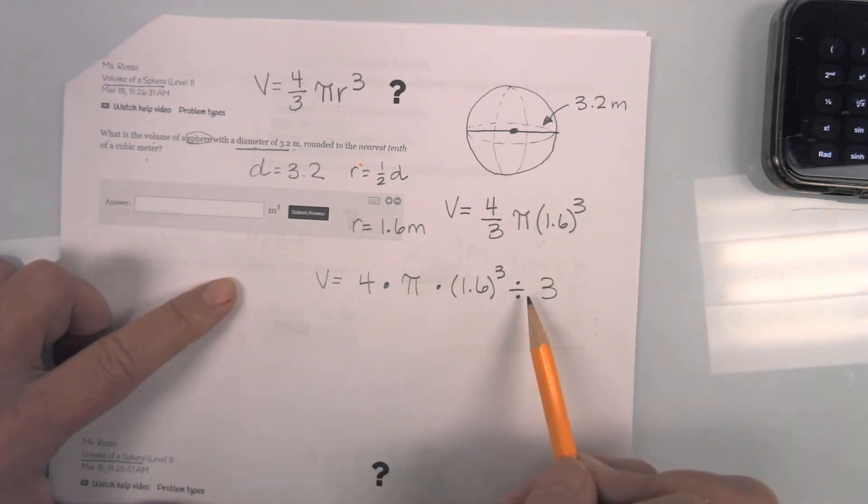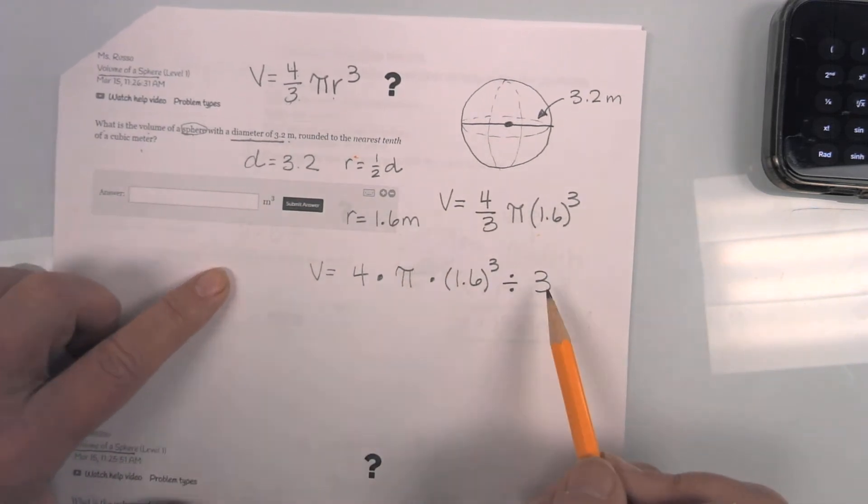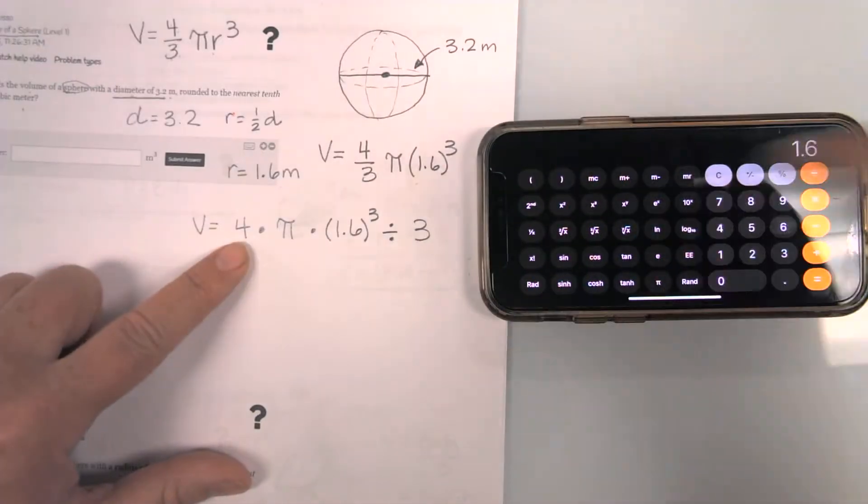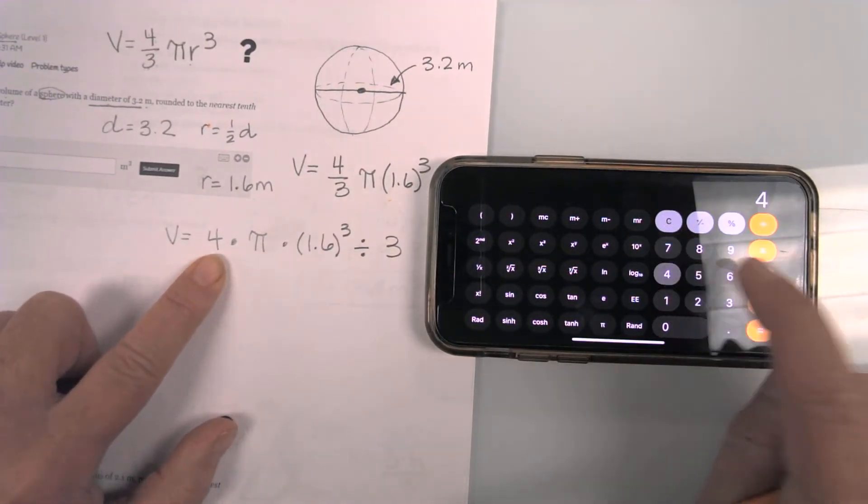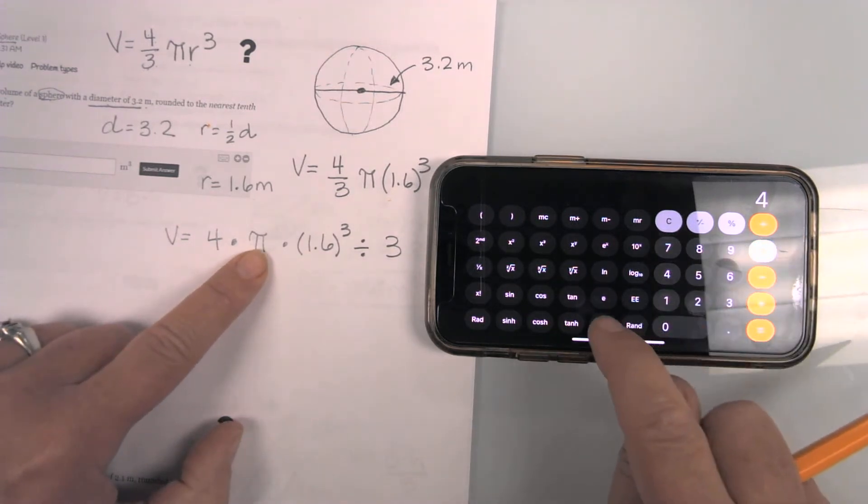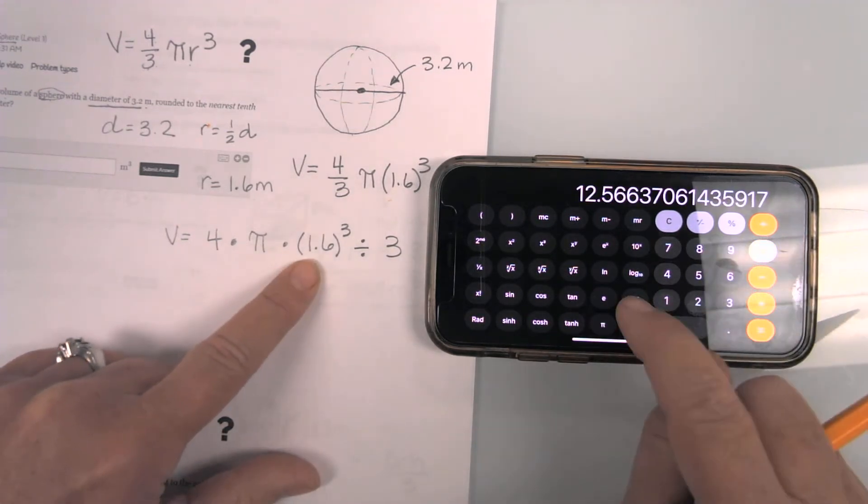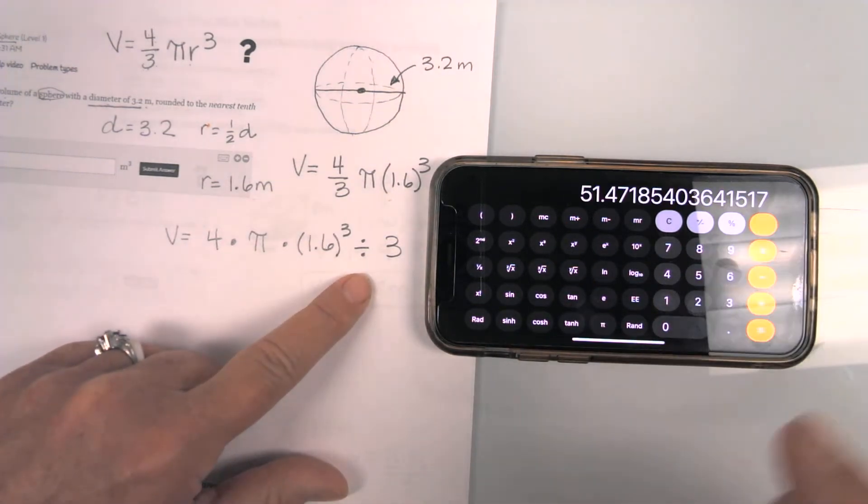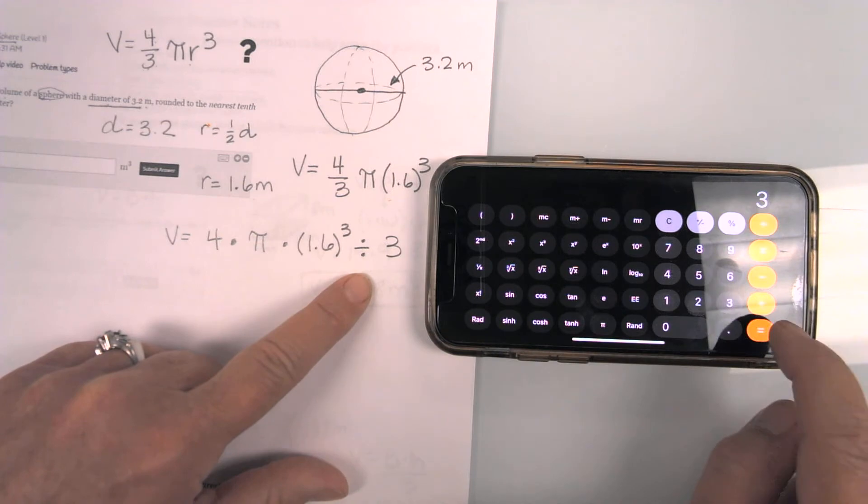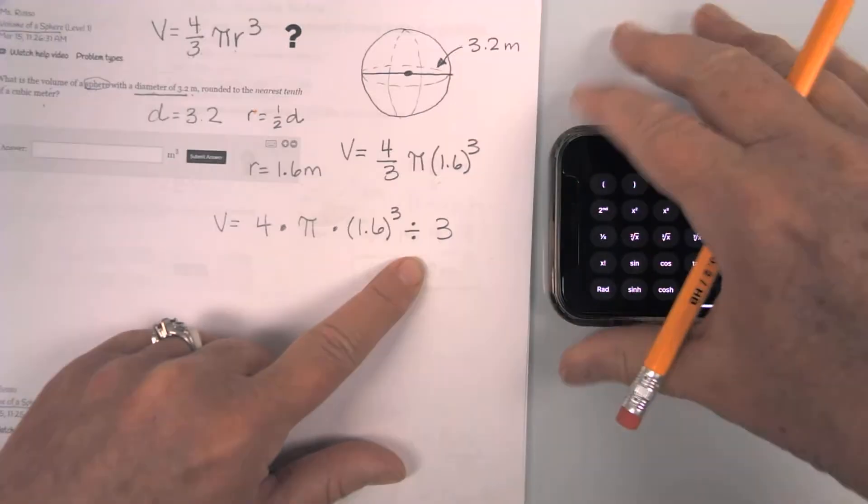And then you are going to hit divide by three. That is how we type this in. Well, at least that is the easiest way. There are more than one way to do this. But let me show you how it works because it does work quite conveniently. I am going to do four times pi times 1.6 cubed divided by three. And there is my number.